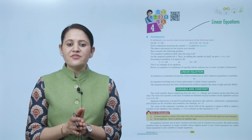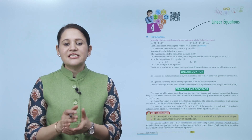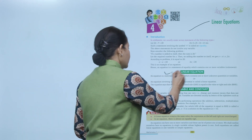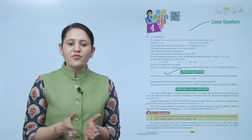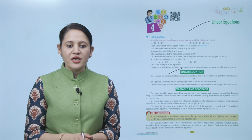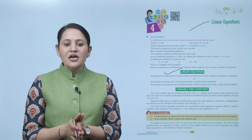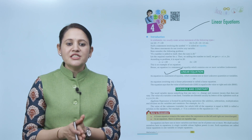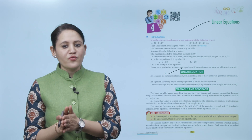An equation is a statement of equality which contains one or more variables, meaning unknowns. Next is the linear equation. An equation involving only a linear polynomial is called a linear equation. The equation states that the value of the left-hand side (LHS) is equal to the value on the right-hand side (RHS).